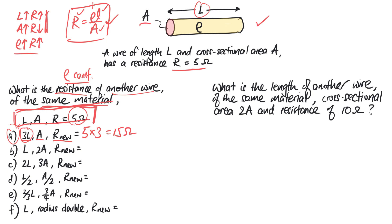For wire B — same length as original, but the cross-sectional area is two times larger. There's no change due to length, but the wire is thicker, so resistance decreases. Dividing by two: 5 ÷ 2 = 2.5 ohms.